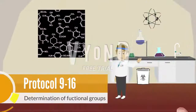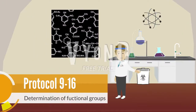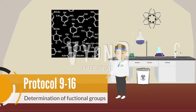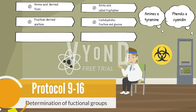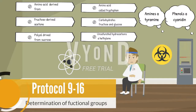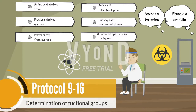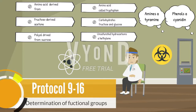At the qualitative analysis level, we find the functional groups. These are important and are determined to know the chemical properties of substances in a sample. In the composition of blackberry, there are different components: in the aldehyde test, a glucose-derived aldehyde; in ketones, fructose; in alcohols, sucrose; in amino acids, tryptophan; in carbohydrates, fructose and glucose; in unsaturated hydrocarbons, ethylene; in amines, tyramine; and in phenols, cyanidin.